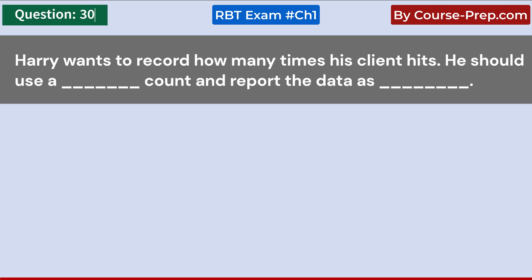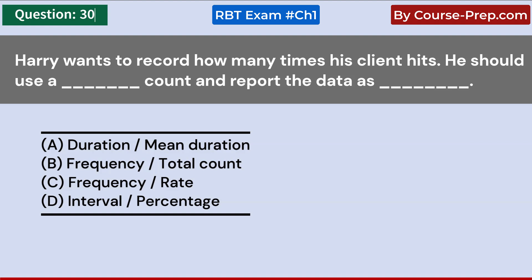Harry wants to record how many times his client hits. He should use and report the data as: A. Duration — mean duration. B. Frequency — total count. C. Frequency — rate. D. Interval. Answer C: Frequency, rate.